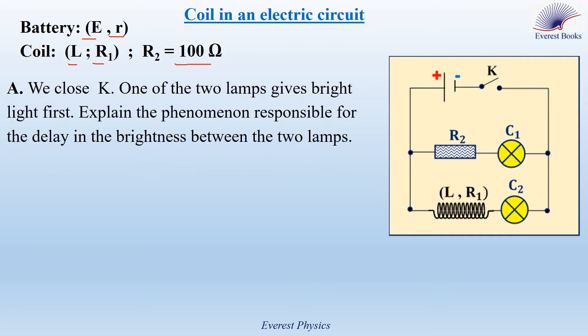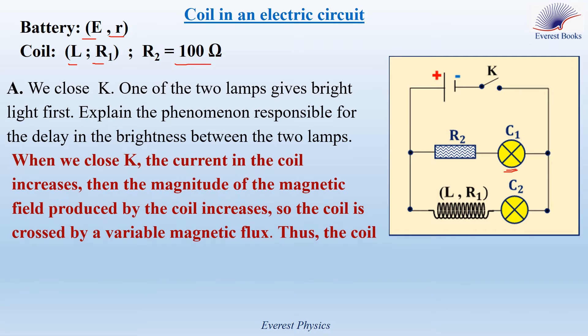We close K. One of the two lamps gives a bright light first. Explain the phenomenon responsible for the delay in brightness between the two lamps. Look at the circuit. C1 gives a bright light first. Why?